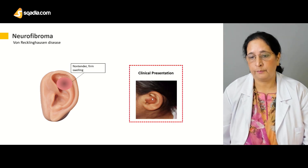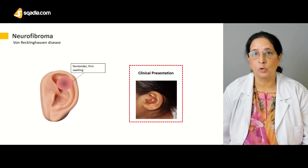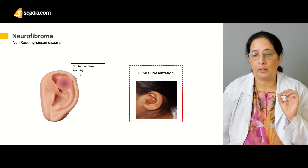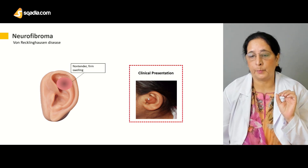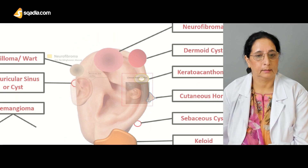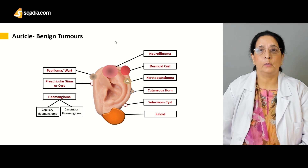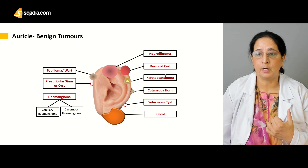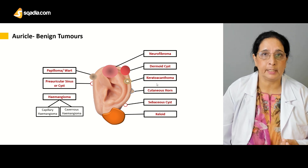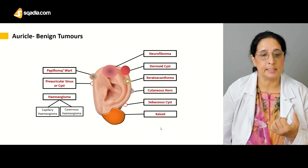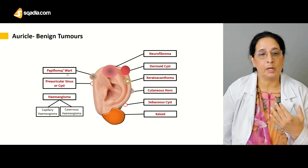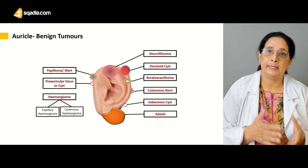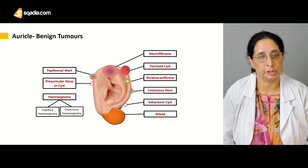Depending on its size, a neurofibroma can grow large enough to completely occlude the external auditory canal and cause obstruction. To summarize, the benign tumors of the auricle include: neurofibroma, dermoid cyst, keratoacanthoma, cutaneous horn, sebaceous cyst, keloid, papilloma, wart, preauricular sinus or cyst, and hemangioma — which can be either capillary or cavernous.